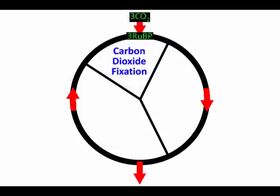During carbon dioxide fixation, carbon dioxide molecule from the atmosphere attaches to RuBP. This forms one six carbon molecule, which splits into two three carbon molecules called 3PG. This process uses the RuBisCO enzyme.